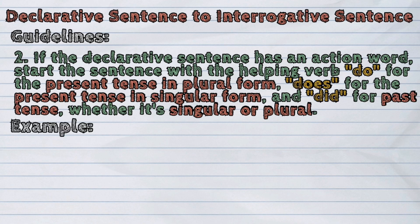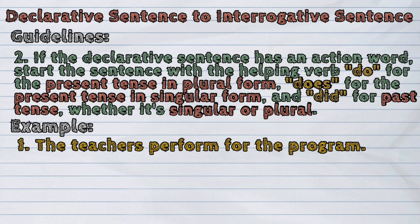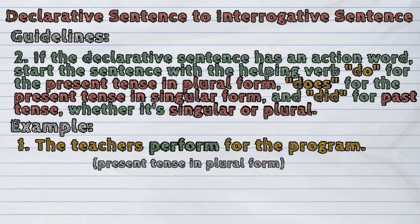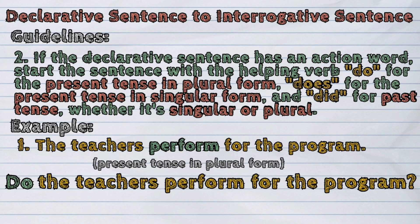First example: The teachers perform for the program. The action word in this sentence is 'perform.' It's present tense in plural form, so we will use the helping verb 'do' to start the sentence, and then copy the rest. It will now become: Do the teachers perform for the program?